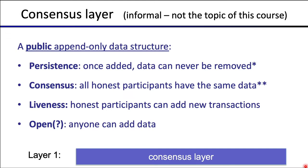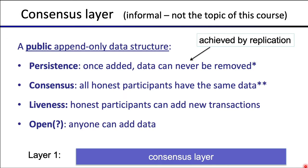If the adversary controls a minority of the network, persistence is guaranteed. We achieve persistence by replication — we replicate data all over the world across many different machines, and as long as the adversary doesn't control more than half of those machines, it can never remove data written to the chain. The second property is consensus itself, which says that all honest participants in the network actually agree on the same data — they all agree on what's on the chain.